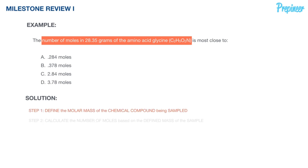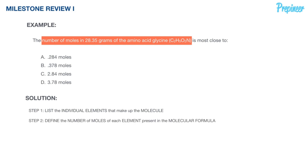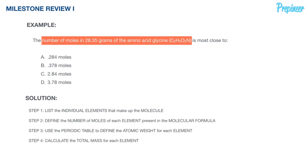Starting with step one — each step has its own sub-process. We will: list the individual elements that make up the molecule, define the number of moles of each element present in the molecular formula, use the periodic table to define the atomic weight for each element, calculate the total mass for each element, and sum up those masses to define the molecular weight.